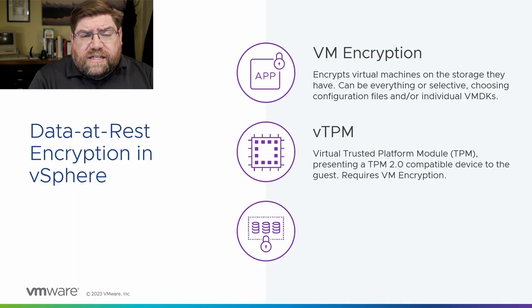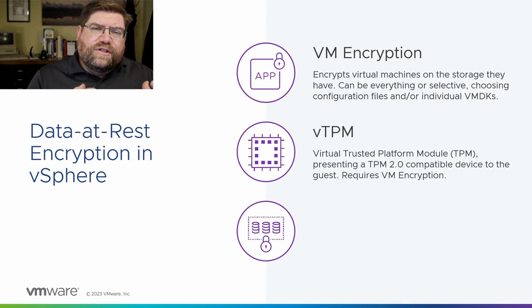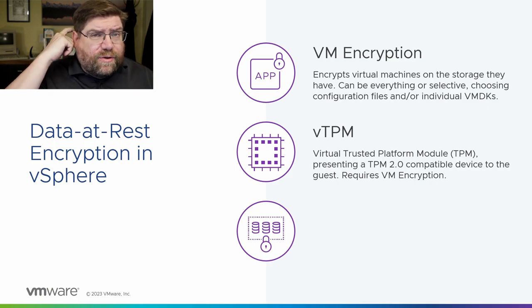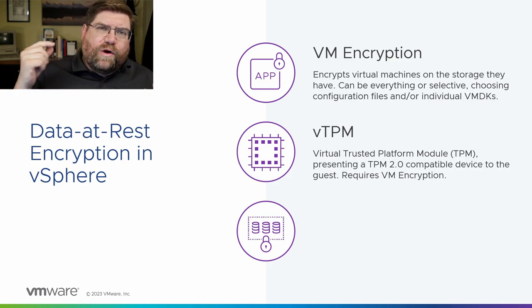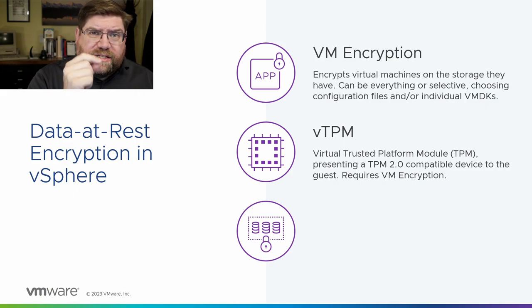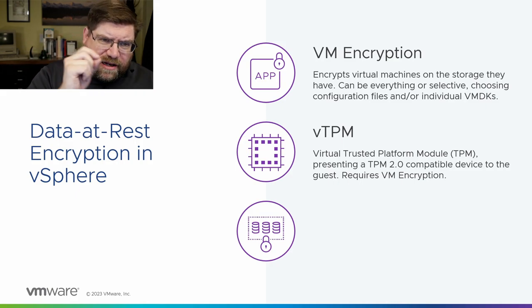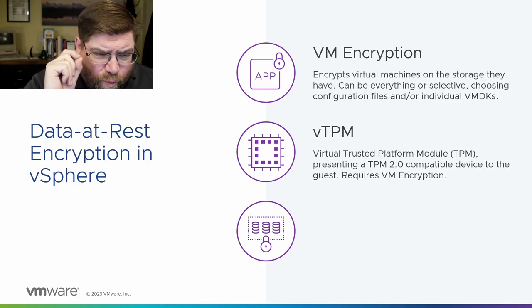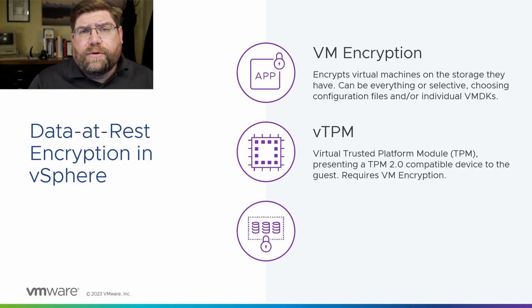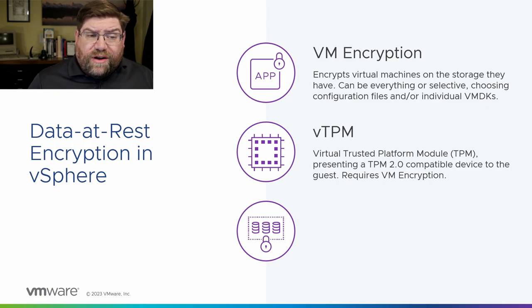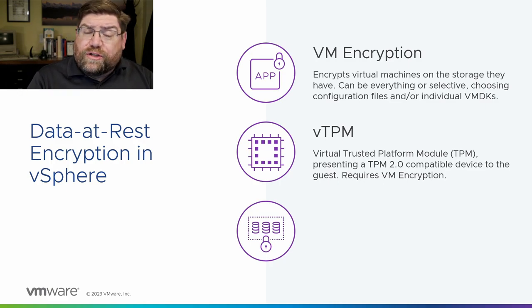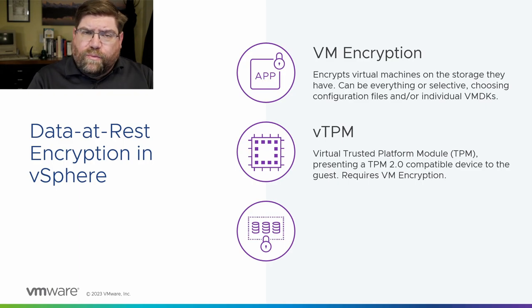Speaking of vTPM, that's the second thing. vTPM really is a form of VM encryption — it uses VM encryption to encrypt the secrets. A virtual trusted platform module is where a workload VM will store its secrets, and we want to protect those on disk so that they're protected. We write them encrypted to the storage they're on. When you turn on vTPM, it encrypts just the home files of the VM. But you do need a key provider, and that's where we're going with this.